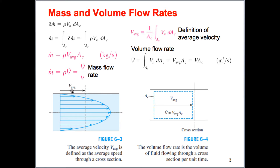Using this average velocity, the cross-sectional area is the area normal to the flow direction — if we're talking about a pipe, we're talking about the pipe's circular cross-section. The density of the fluid is just the density of the fluid, and we can express it either as rho or as 1 over the specific volume.